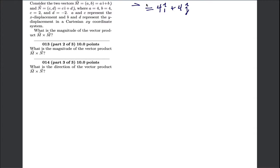And the N vector is 2i minus 2j-hat. So let me verify: that's ai plus bj, so that's 4, 4. And that's ci plus dj, so that's 2, negative 2.